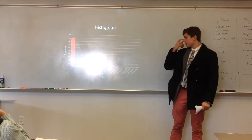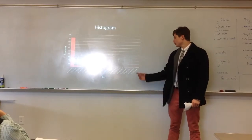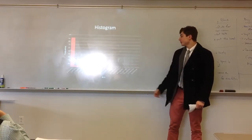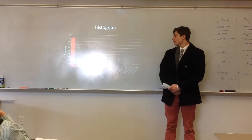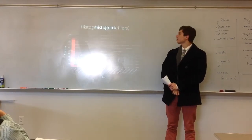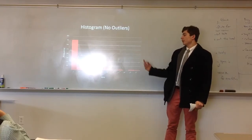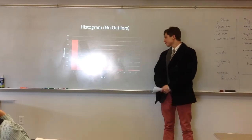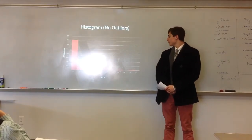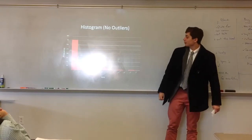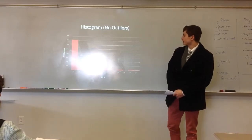Here's my histogram — this is with my outliers. As you can see, it's very right skewed. There's the U.S. over here, and there are other countries that are outliers too. And here's without outliers — it's a lot easier to see. It's also very right skewed, and it shows how a lot of the countries are in the 0 to 20 percentile range.